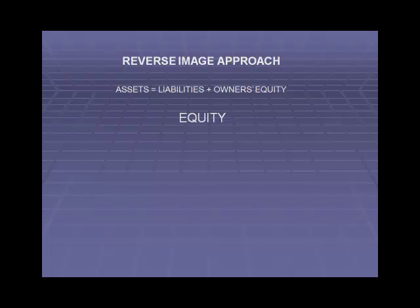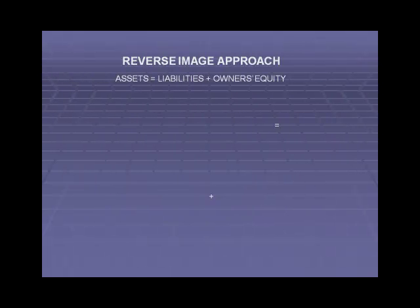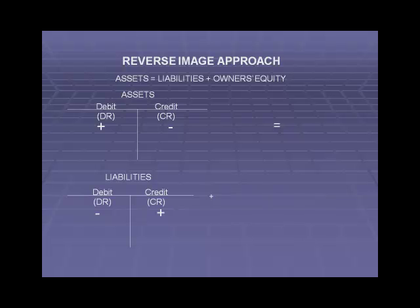Equity is also increased with a credit and decreased with a debit. So, as a summary: assets equal liabilities plus owner's equity. Assets are increased with a debit, decreased with a credit. Those assets equal the total of the liabilities — decreased with a debit, increased with a credit — plus the equity accounts, which are increased with a credit and decreased with a debit.